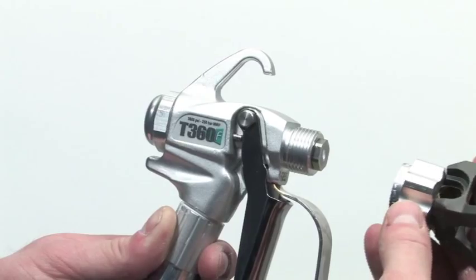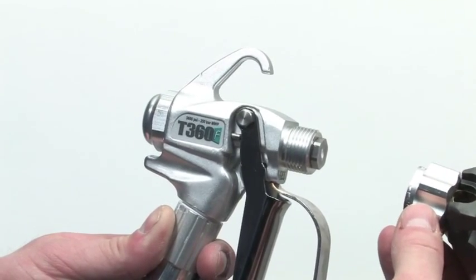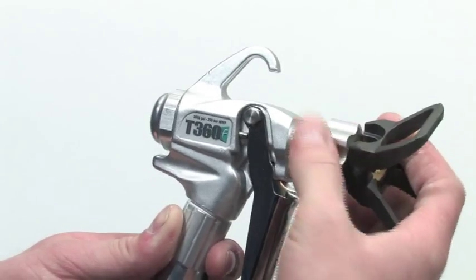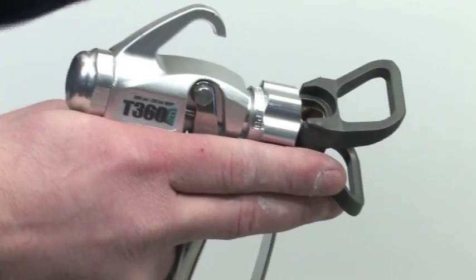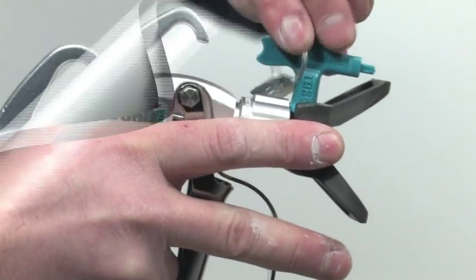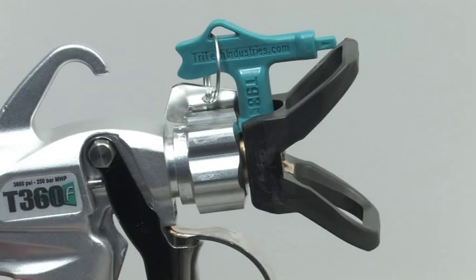Now it's time to install the tip and tip guard back onto the gun. Go ahead and screw the tip guard onto the gun. Insert the tip and tighten. Be sure that the arrow on the tip handle is pointing forward and that it is seated completely into the holder.